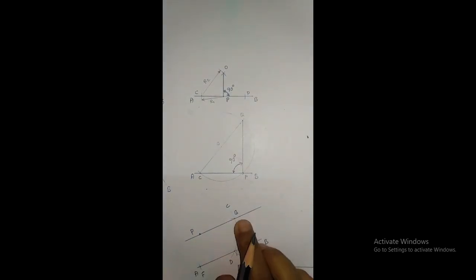The next question is to divide a given straight line into any number of equal parts. First, draw the given line AB.